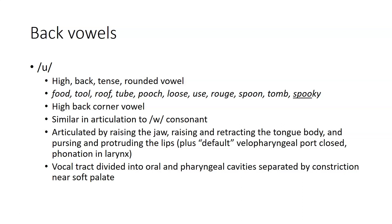The other primary category of extreme vowels in English are the back vowels. At the highest end, we have the U vowel, a high back, tense, and rounded vowel found in words like food, tool, roof, tube. It is the high back corner vowel, with articulation very similar to the W consonant. It's articulated by raising the jaw, raising and retracting the tongue body, and pursing and protruding the lips, plus the usual closure of the nasal passage and phonation.